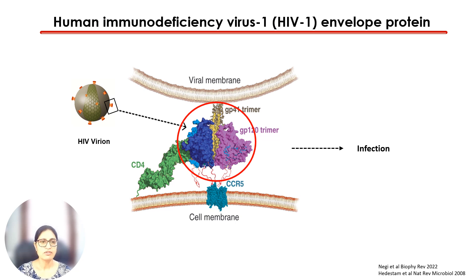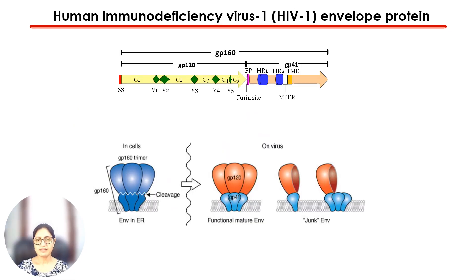The virus has about 7 to 14 envelope trimers per particle, but this number can vary based on the isolate. The envelope is synthesized as a GP160 precursor protein in the endoplasmic reticulum, which is then cleaved into GP120 and GP41 in the Golgi and assembles into trimers that are then directed to the plasma membrane for incorporation into the virions.